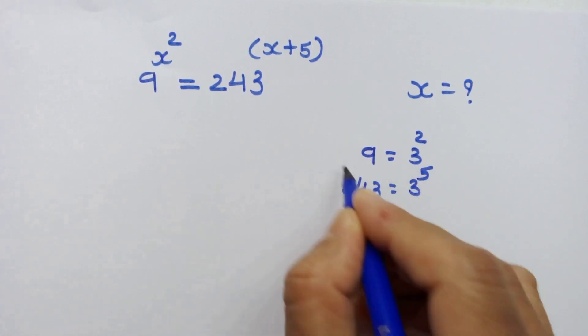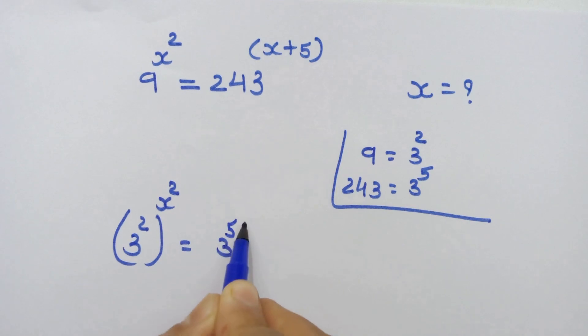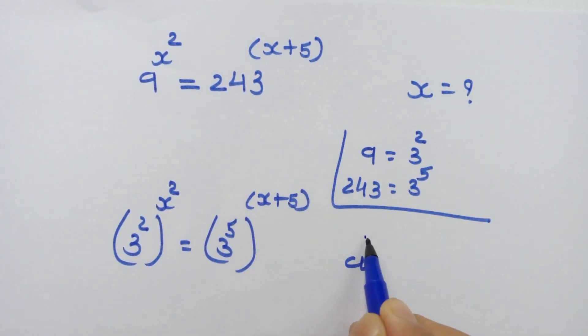So let's put these values. We have (3^2)^(x^2) = (3^5)^(x+5). Now if (a^b)^c, then we can write a^(b×c).